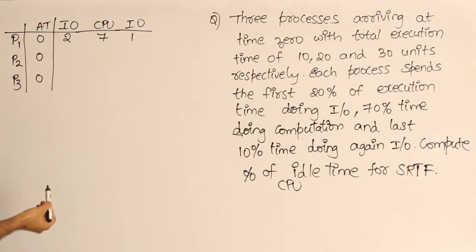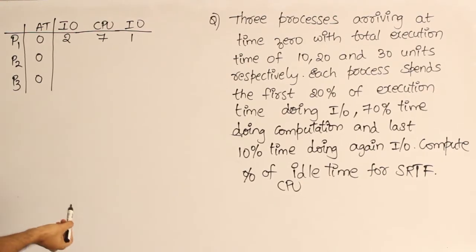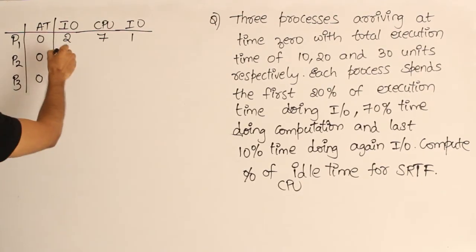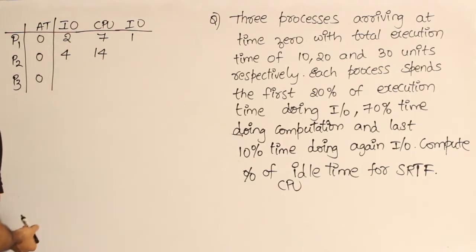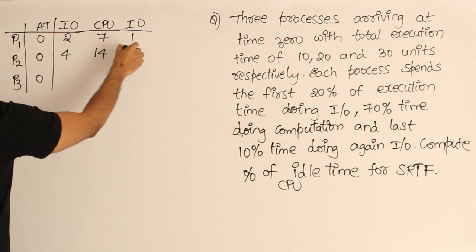Similarly, the second one, which has 20 units of execution time, is going to spend 20% on I/O, which means 4, then 70% doing execution CPU, which means 14, and then 10% doing I/O, which means 2.